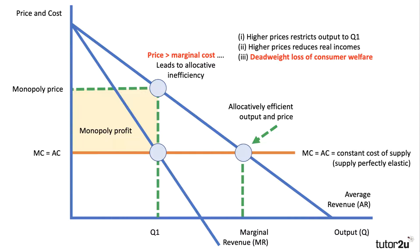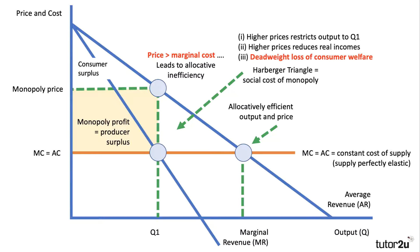Higher prices also reduce the real incomes of consumers, and there is a deadweight welfare loss because output is squeezed to Q1 and price is higher than it would normally be. This triangle is known as the deadweight loss of consumer welfare — also called a Harberger triangle — and it represents the social cost of monopoly. So when output is reduced and price is above marginal cost, it benefits the monopolist with extra producer surplus, but consumer surplus falls and overall welfare diminishes.